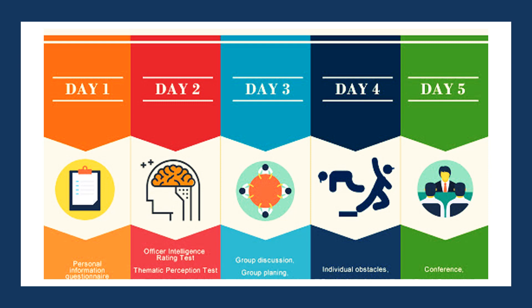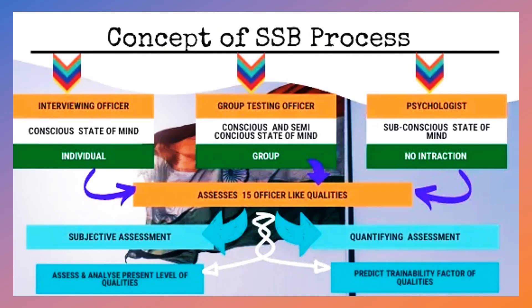Now let us proceed. SSB is a five-day testing procedure with various types of tests — personality individual tests, mental level tests, physical level tests, group discussions, physical tasks, and a conference. In these five days, whether it is your interviewing officer, your GTO, or your psychologist, all are basically going to check your subconscious and conscious mind — how you tackle situations and react — and on that basis do a subjective assessment.